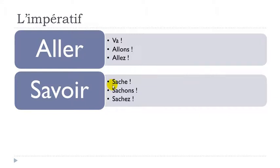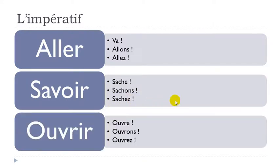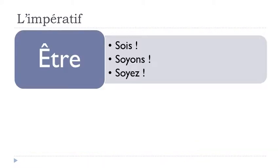More irregular verbs: 'savoir' gives 'Sache!', 'Sachons!', 'Sachez!' And 'ouvrir' — the S goes away — gives 'Ouvre!', 'Ouvrons!', 'Ouvrez!' Then 'être' becomes 'Sois!', 'Soyons!', 'Soyez!' — remember the final S is not pronounced.